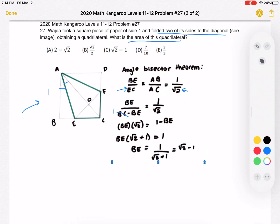And we don't really like to have this irrational number in the denominator. So we can multiply by the conjugate, square root of 2 minus 1 on top and bottom, to get that BE equals square root of 2 minus 1.